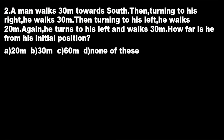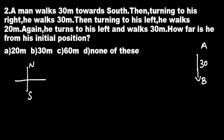Second question: a man walks 30 meters towards south. Let the starting point of the man be A, and he walks 30 meters towards south. First draw the basic directions: north, south, east, west.